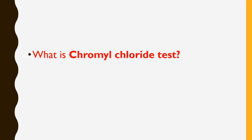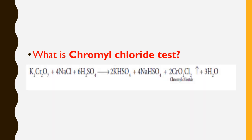To test whether a chloride ion is present in any substance, we take, for example, sodium chloride and mix it with the powerful oxidizing agent potassium dichromate. In the presence of acid, this gives products including potassium bisulfate, sodium bisulfate, and chromate chloride. The chromate chloride product is particularly important.